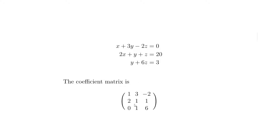The coefficient matrix is made of all the coefficients of the terms on the left-hand side — all the X's, Y's, and Z's. The X column goes here, the Y's go in this column, and the Z's go in this column. Each row corresponds to each equation.